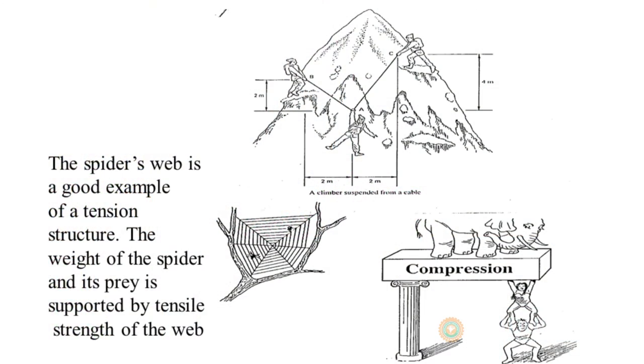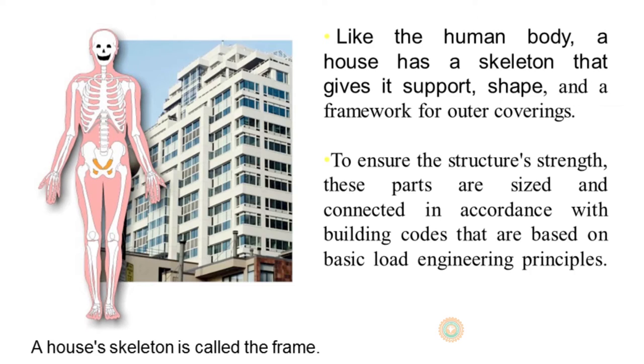Different types of loads include tensile loads or compressive loads, depending on the way the load acts on the structure. The best example of tensile load is a spider's web — the weight of the spider and prey is carried by the web in tension. Another good example of a structure is our human skeleton, which maintains the shape of the body. Structures can be classified into many types.